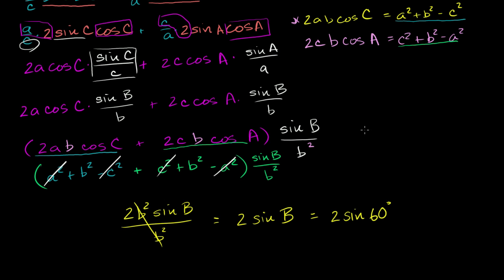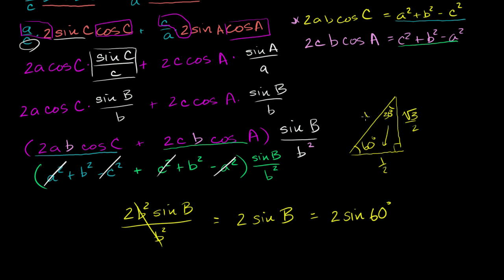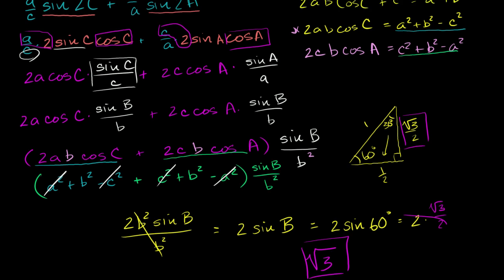Using a 30-60-90 triangle with hypotenuse 1, the side opposite 60 degrees is √3/2. So sine of 60 degrees equals √3/2. Therefore the expression equals 2 times √3/2, which gives us the square root of 3.